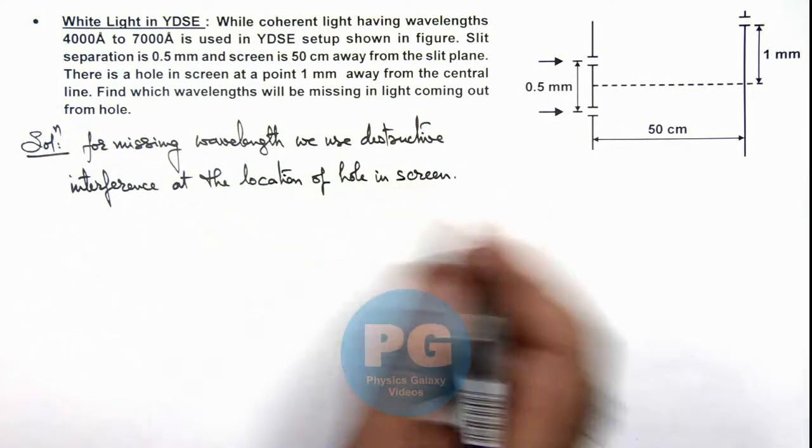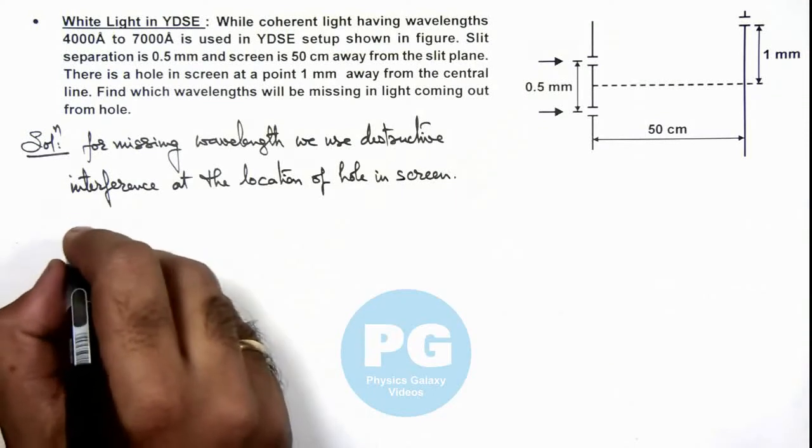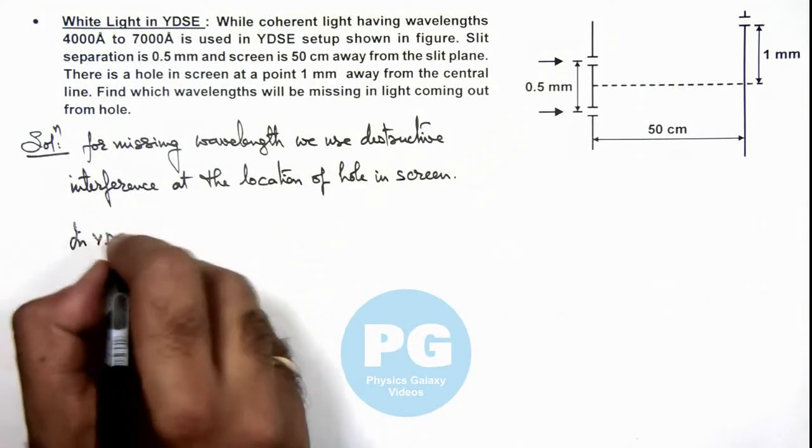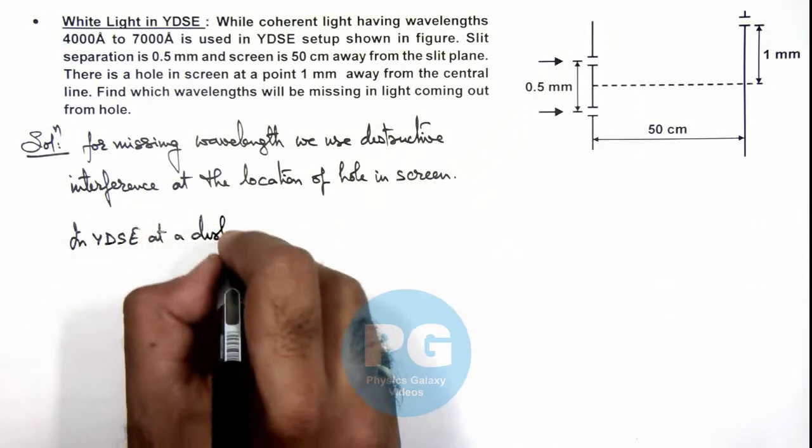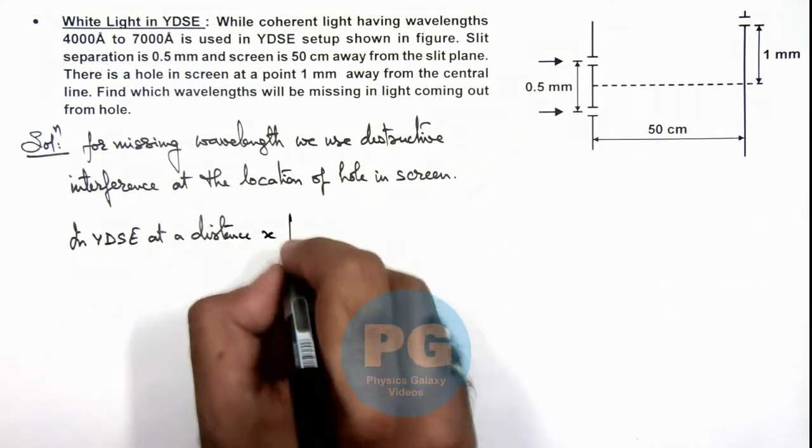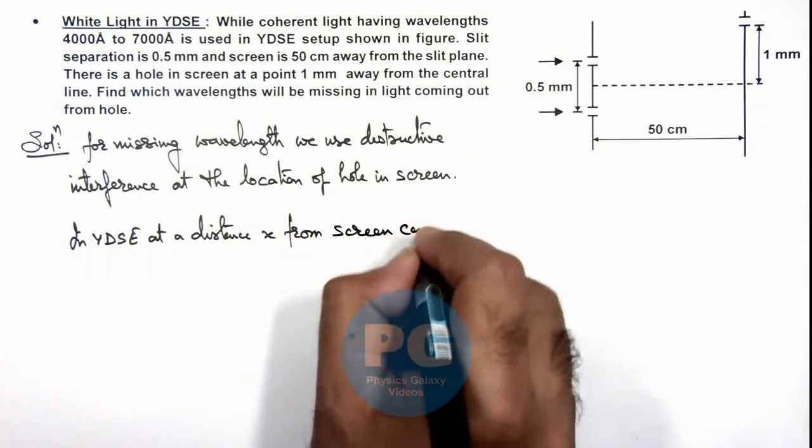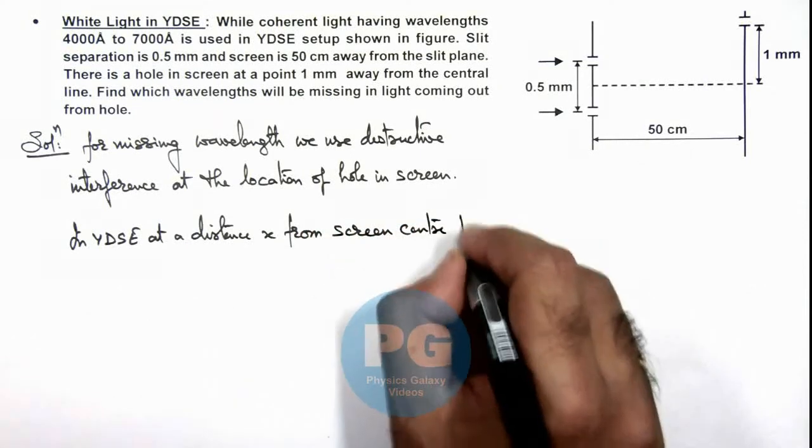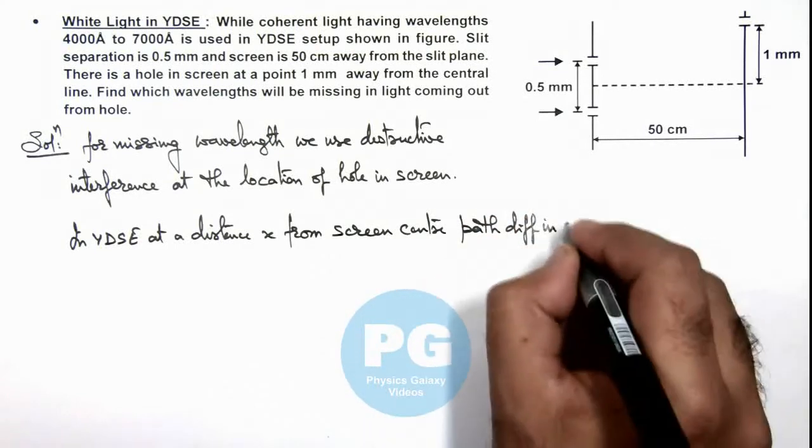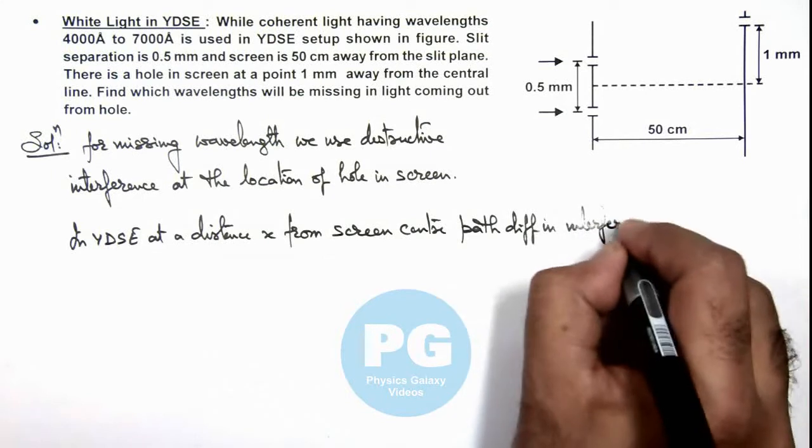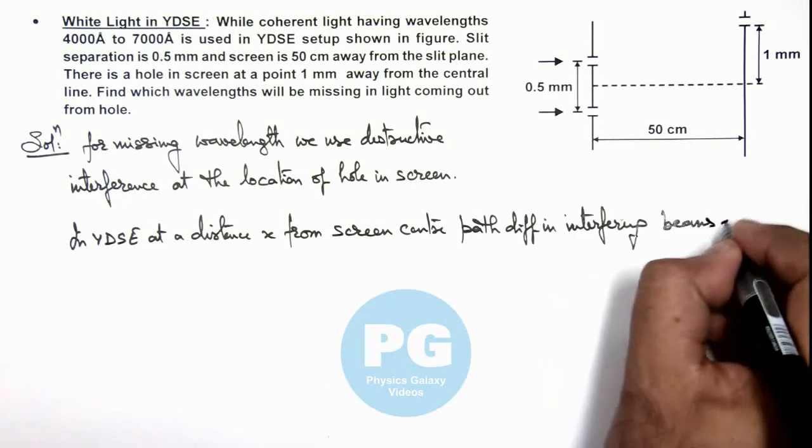Now in this equation, first if we calculate the path difference, we already discussed that in YDSE at a distance x from screen center, path difference in interfering beams is written as small d times x by capital D.